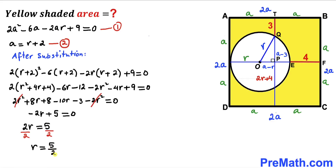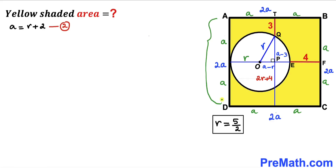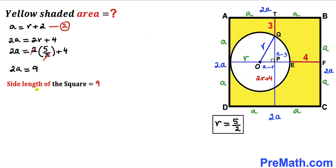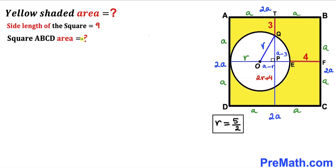The side length of the square is 2a. Multiplying Equation 2 by 2: 2a = 2r + 4. Substituting r = 5/2: 2a = 2 × (5/2) + 4 = 5 + 4 = 9. So the side length of square ABCD is 9 units.